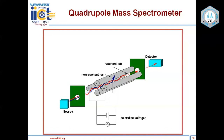In quadrupole mass spectrometers, ions are analyzed by a quadrupole field produced by four hyperbolic rods placed at the corners of a square. Adjacent rods have opposite polarities, and a combination of RF and DC voltage is used to mass-separate the ions. At a particular ratio of RF to DC voltage, only ions of a specific m/z value have stable oscillations and pass through the collector slit to reach the detector. Other ions strike the walls of the rods.